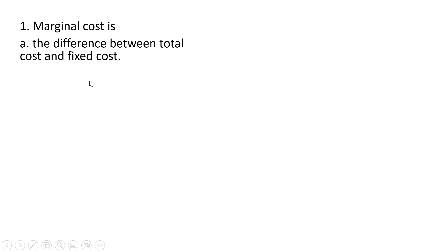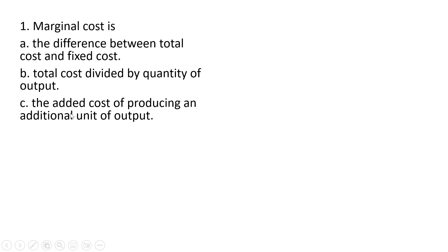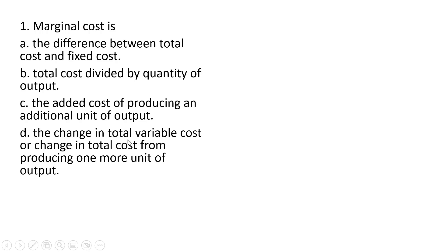Question 1. Marginal cost is the difference between total cost and fixed cost — that is false. Total cost divided by the quantity of output — that is false; this would be the average total cost. The added cost of producing an additional unit of output — yes, that is the definition of marginal cost. The change in total variable cost or change in total cost from producing one more unit of output — question D is also correct. So the correct answer here is C and D.